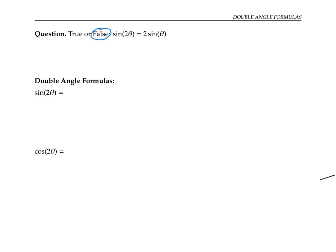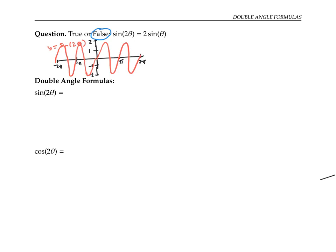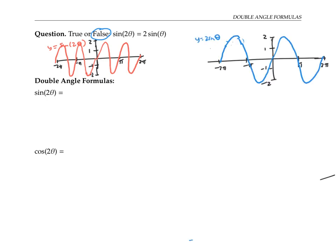One way to see this is graphically. If I graph y equals sine of two theta, that's like the graph of sine theta squished in horizontally by a factor of one half. On the other hand, if I graph y equals two sine theta, that's like the graph of sine theta stretched vertically by a factor of two. These two graphs are not the same, so we need a more complicated formula for sine of two theta.